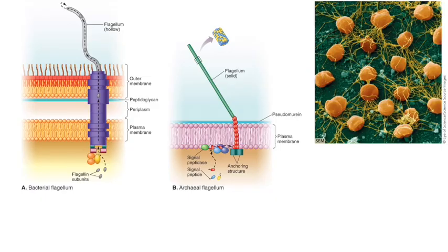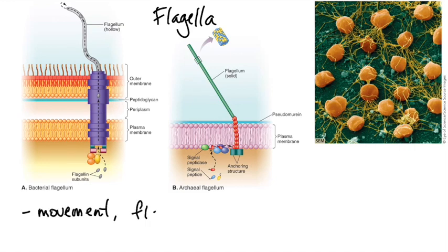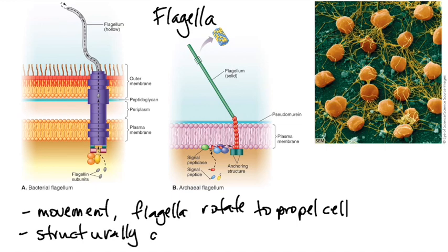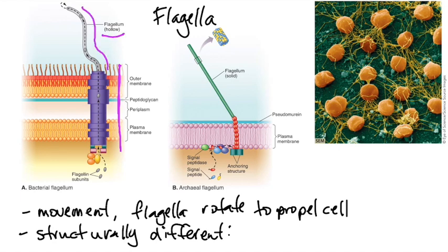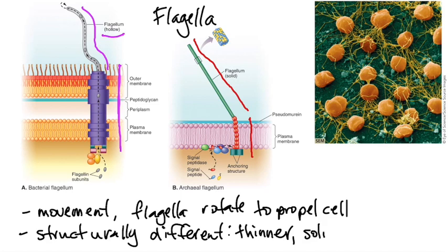One last archaeal structure is their flagella. Like bacteria, they can use flagella to move, and like bacteria, these flagella rotate to propel the cell forward. However, they are structurally different from both bacteria and eukarya. The bacterial flagella is very thick as it moves through the cell membranes and the peptidoglycan layer, and the outer tube is a hollow filament. In archaea, it is much, much thinner — about half as thick as the bacterial flagella — and the portion that projects from the cell is actually solid, not a hollow tube. Organisms in all three domains of life possess flagella, but among all three domains, flagella differ in structure, movement, and the proteins used to build them.